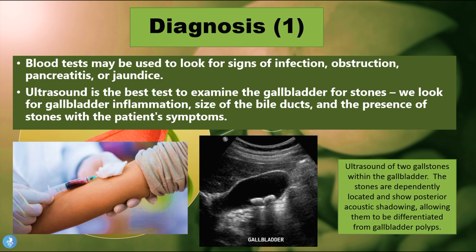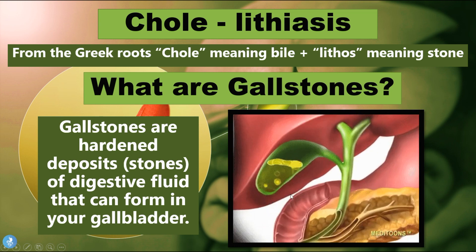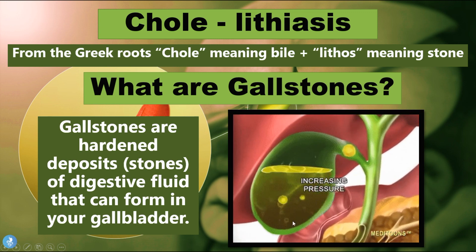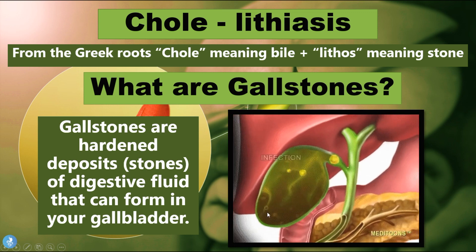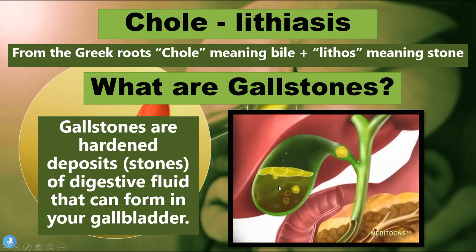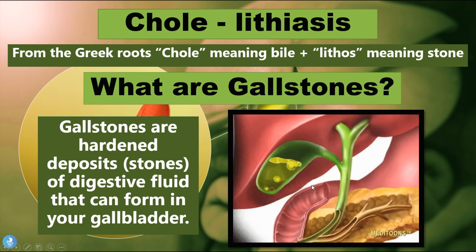How can one go about diagnosing gallstone disease? A blood test may be used to look for signs of infection, obstruction, pancreatitis, or jaundice. These gallstones can get stuck within multiple ducts, causing a stasis of bile within the gallbladder. Eventually the gallbladder becomes increased in pressure, starts to expand, inflame, and become infected — this is what cholecystitis, or infection of the gallbladder, is. A blood test will show us the signs of infection.